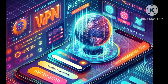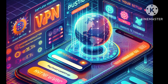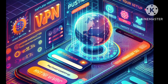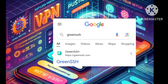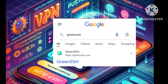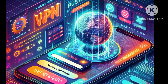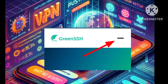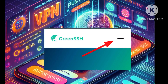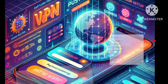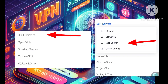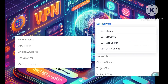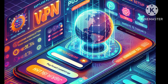Step 1: Let's kick things off. Open up your favorite web browser and navigate to the Green SSH website. Moving on to Step 2: once you're on the home page, locate the menu icon in the top right corner and give it a tap to reveal a menu. Head to SSH Servers and from the submenus, choose SSH WebSocket to commence the server creation process.